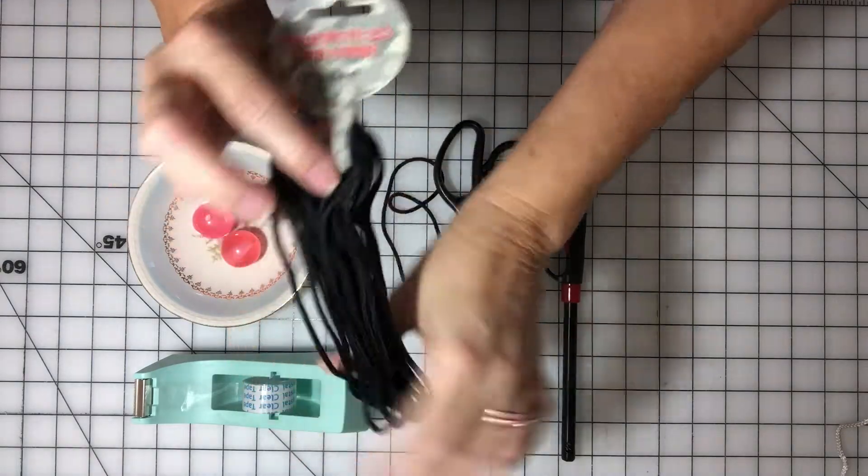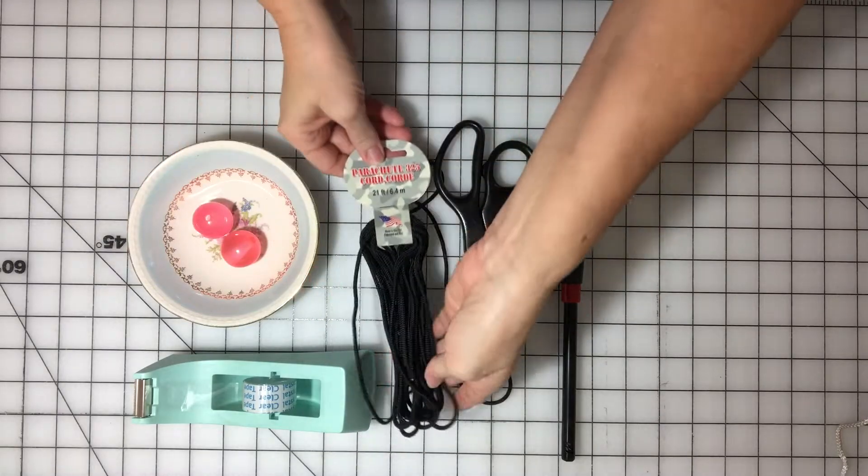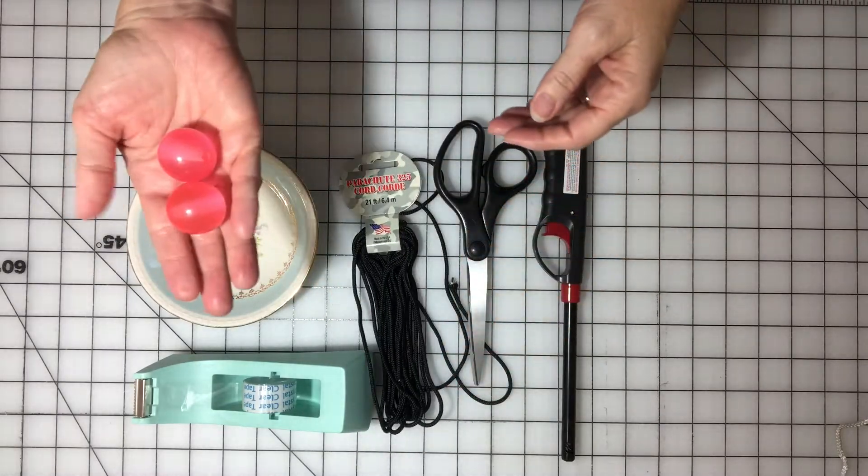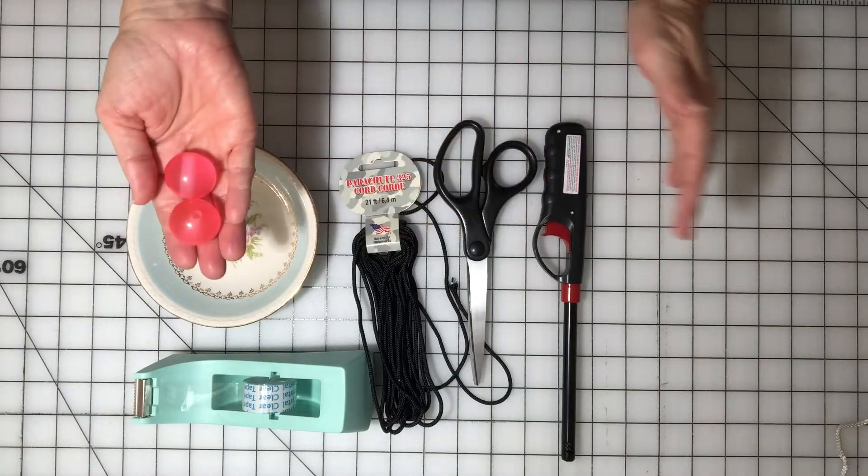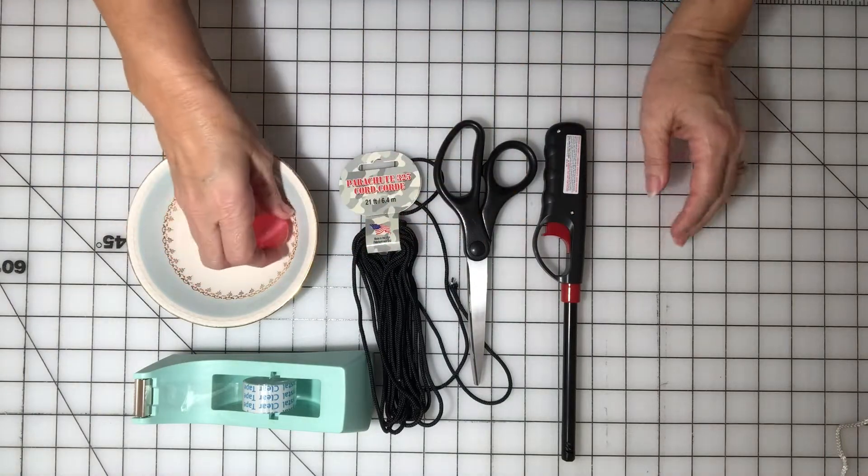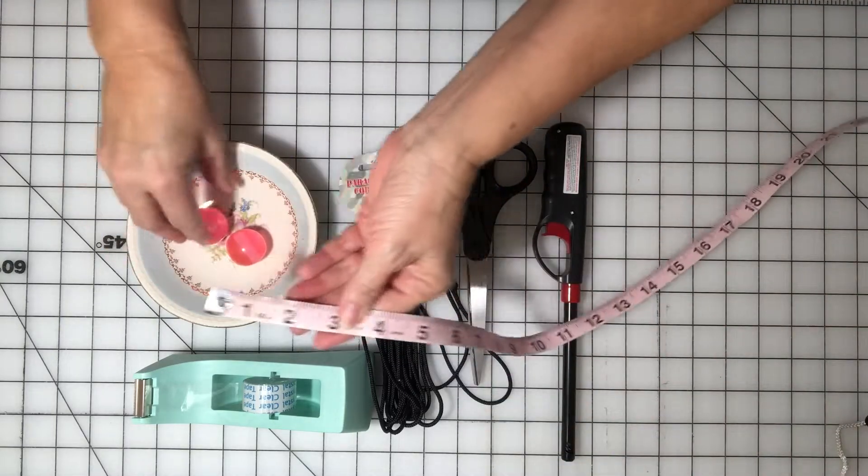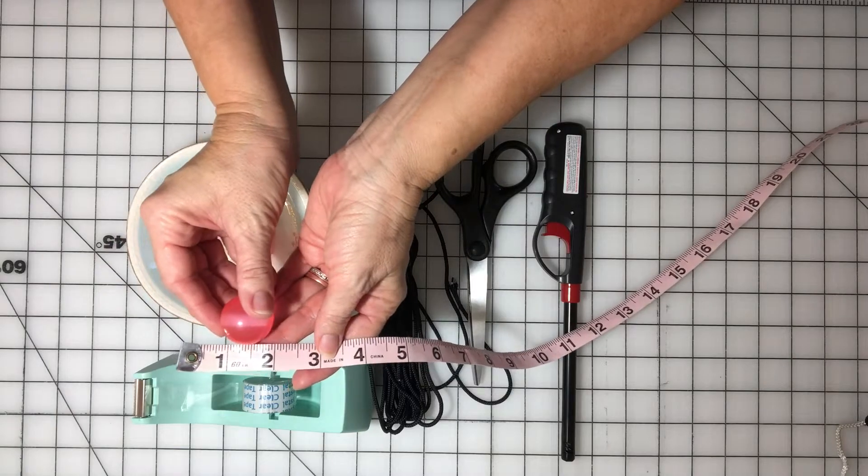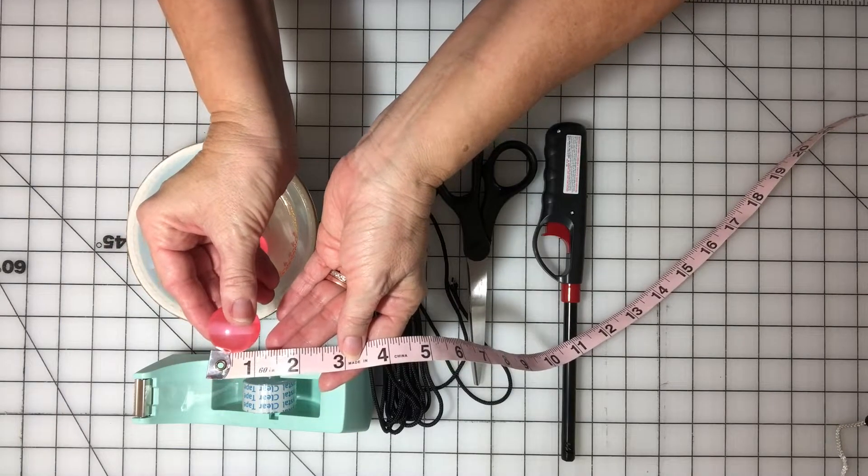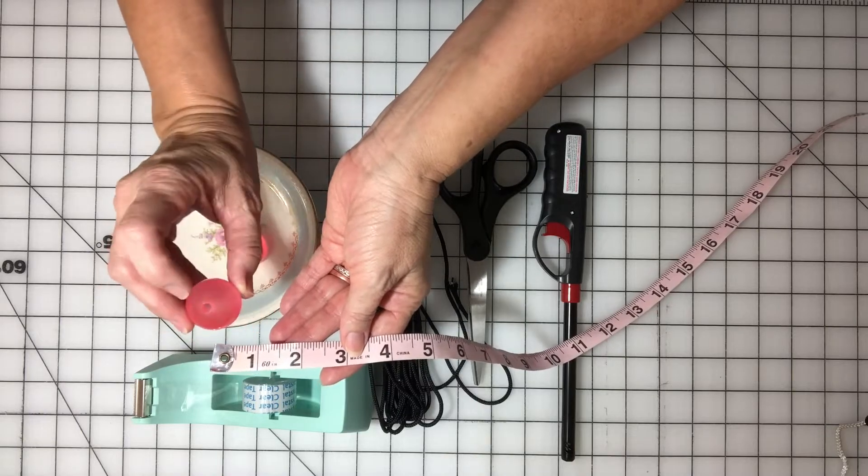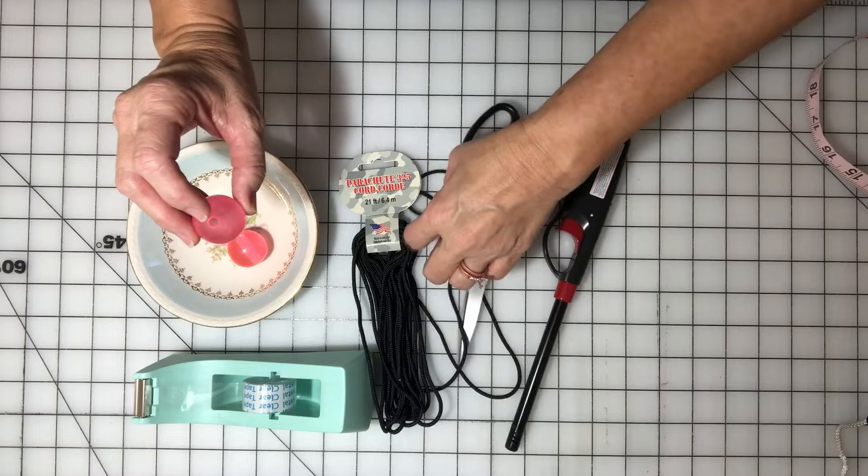I bought these a long time ago at Joann's and I can't remember the name or the size, but you want to get some large beads. This one is approximately almost an inch, a little less than an inch wide, but you want to make sure the hole is big enough that the parachute cord can go into it.